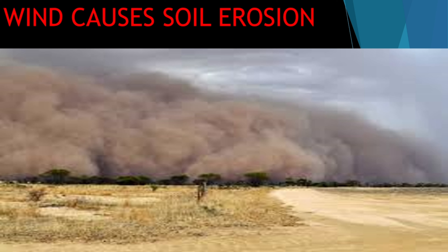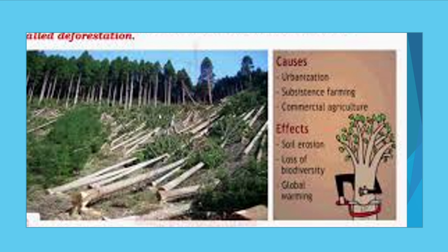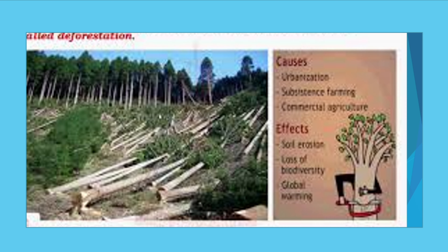Now look at this slide — here you can see that as a big wind comes, it carries away the topsoil, so wind also causes soil erosion. Now look at this: cutting down a large number of trees in a forest is known as deforestation. Deforestation is a major cause of soil erosion. When you cut down all the trees, the soil becomes bare and loose, and as water or air comes, the topsoil is carried away. The roots of trees hold the soil together, so when we cut down trees, the soil becomes bare, the heat of the sun makes it dry and loose, and the air and water wash away the topsoil.